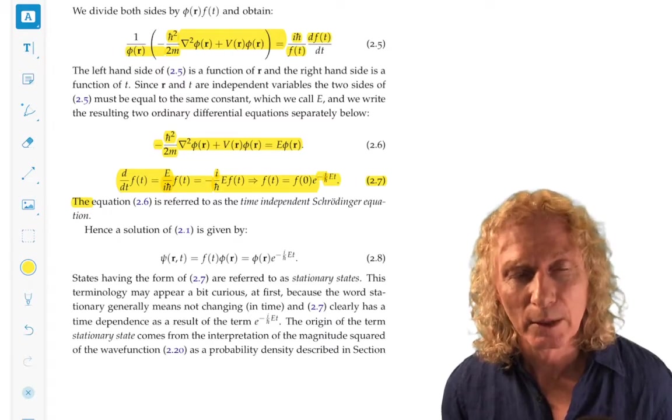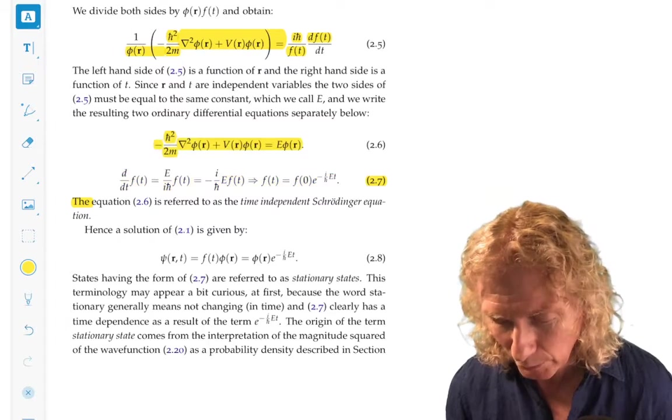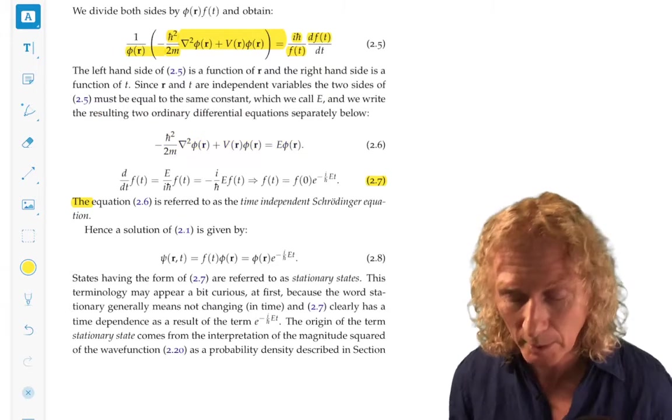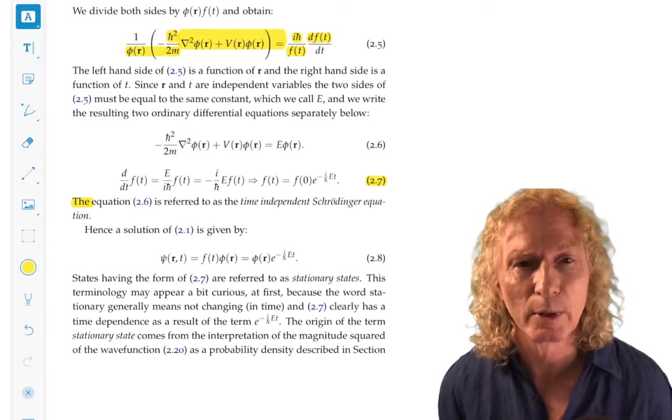The spatial-dependent part is more complicated, as you might expect, because that's the part that involves the potential energy that doesn't depend on time. And we refer to it as the time-independent Schrödinger equation.